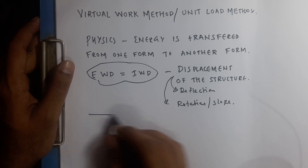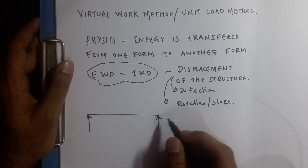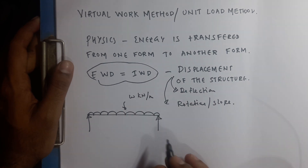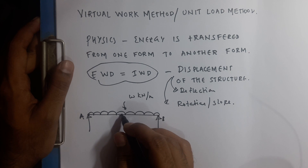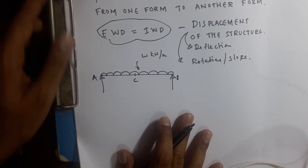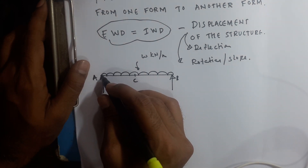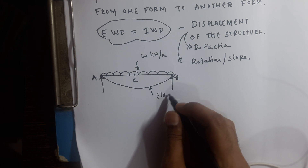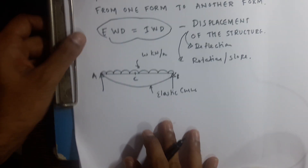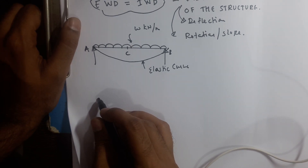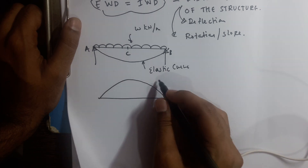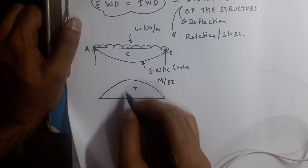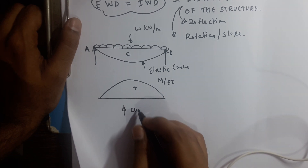A simply supported beam subjected to UDL over the entire span — W kilonewton per meter. This point is A, this point is B, and this point is C. I will draw the deflected shape, which is also called the elastic curve. I will draw the curvature diagram. Since it is subjected to UDL, I take M/EI — the moment diagram divided by EI — which gives the curvature diagram, denoted by Phi.